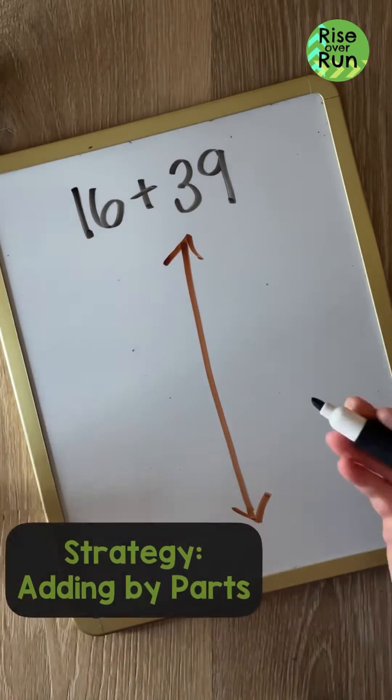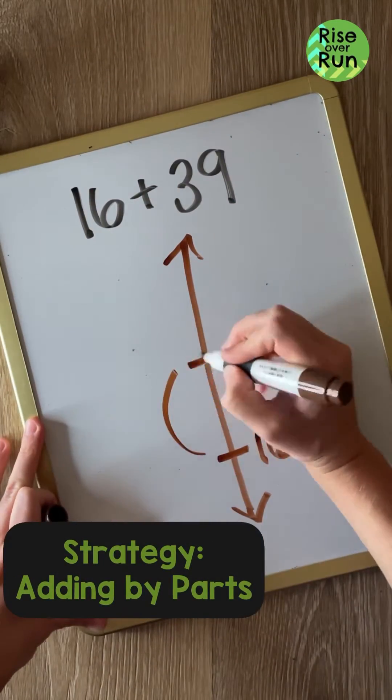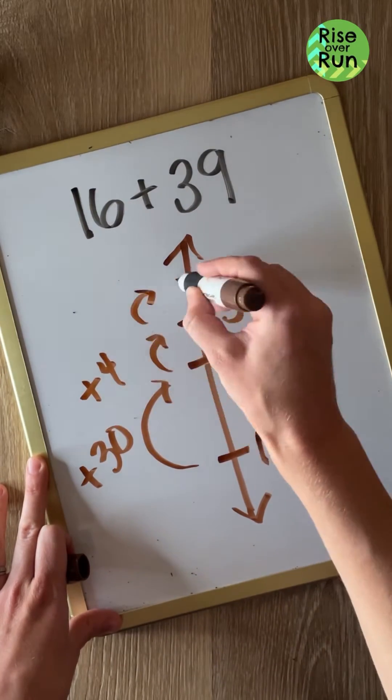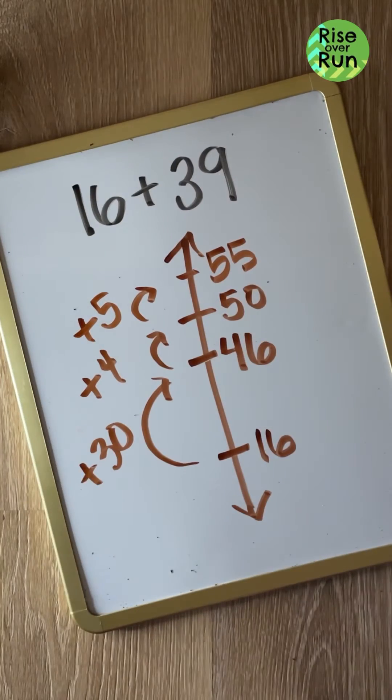This next strategy is adding by parts. We'll start with one number and work our way up adding parts or chunks of the other number. So I'll add 30 to get to 46, 4 to get to 50, and 5 to get to 55.